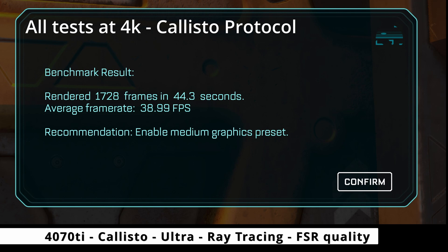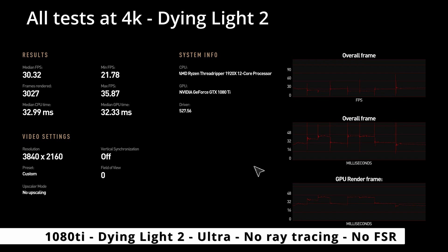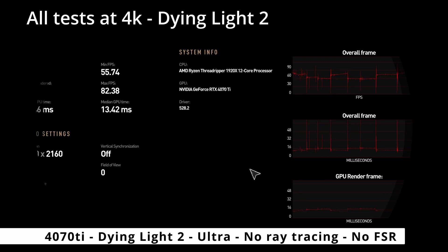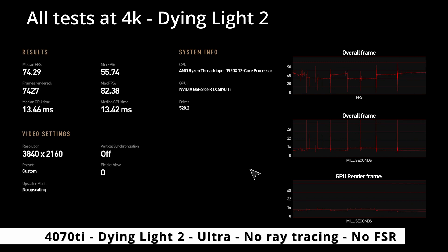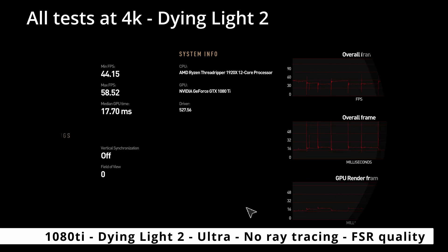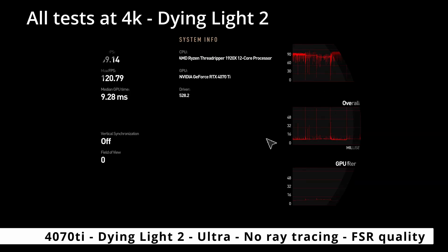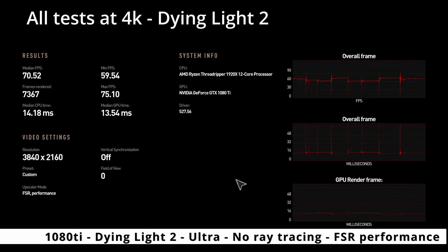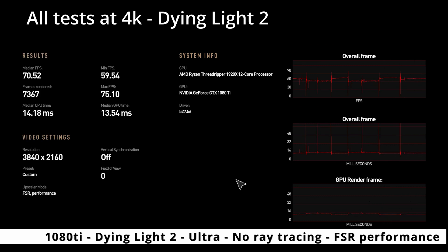I think this is a CPU limitation I may have hit there. In Dying Light 2, Ultra, no Ray Tracing, no FSR: with the 1080 Ti we get highs of 30 and lows of 22. On the 4070, highs of 74 and lows of 55. 1080 Ti, Dying Light 2, Ultra, no Ray Tracing with FSR: 54 highs and 44 lows. The 4070 is 102 with 69 lows — that's FSR Quality Mode. 1080 Ti Performance Mode: 70 with lows of 59. This is without Ray Tracing, obviously.